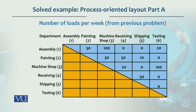If you look at the movement between assembly and machine shop, and machine shop and testing, there are 100 movements each. That means this is priority number one — it is important that these departments be located next to each other, so that load-distance movement is minimized.